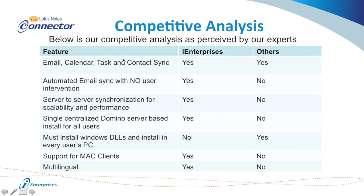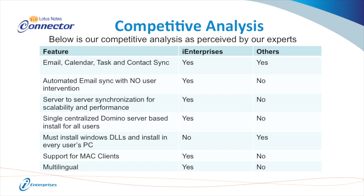Let's talk about what makes us different. Although other products provide basic functionality, we have additional functionality like automated email sync, among other things. We have server-to-server side synchronization so everything always stays up to date, which helps with scalability and performance — we have customers with thousands of users on this product. There's also a single centralized Domino server-based install for all users, meaning you can deploy it to everyone without visiting every PC or desktop, with no DLLs to install on each PC. Unlike other solutions, we also support Mac clients and have a multilingual version of the product. The installation and administration piece is key to managing a product like this for a large number of users.